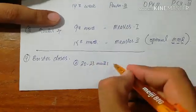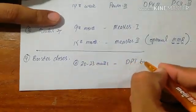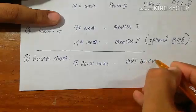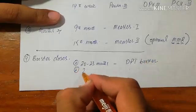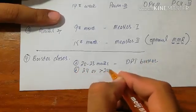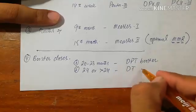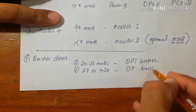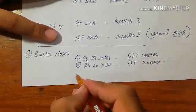There are also booster doses given for some vaccines to boost immunity. The first booster is DPT, given between 20 and 23 months. However, if the child presents late at 24 months or greater than 24 months, then DT booster is given instead of DPT.